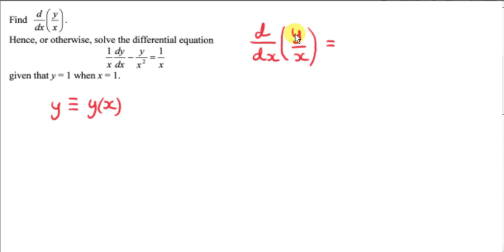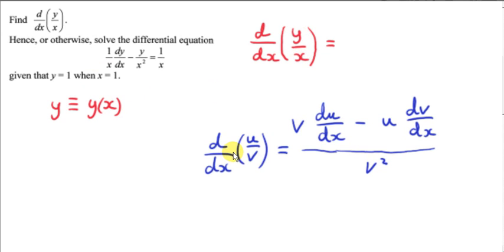We have a quotient of functions here inside the brackets, so that means we have to use the quotient rule. Here is the quotient rule. It is assumed that both u and v are functions of x, and that's exactly the situation in our problem — y and x are functions of x. We take the function in the denominator, v, which in this case is x.